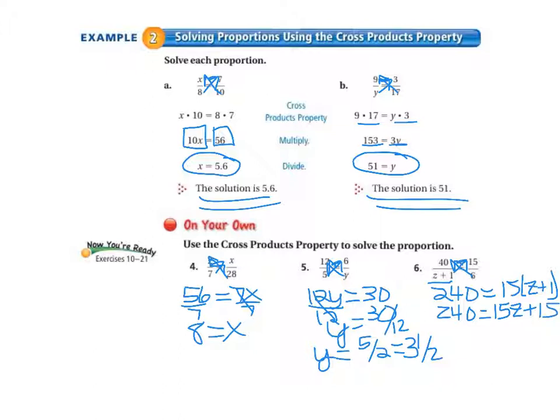So we have 240 equals 15 times z equals 15z plus 15 times 1 equals 15. Then we need to first subtract 15 from both sides. So we now have 225 equal to 15z. Then we divide both sides by 15. That gets the z by itself, which is what we're looking for. 225 divided by 15 equals 15. So our solution is z equals 15.